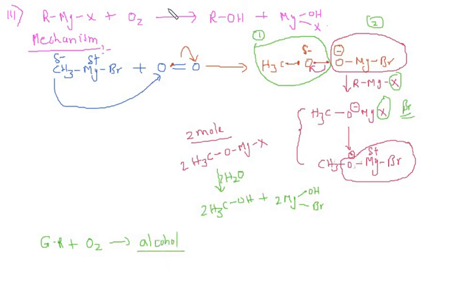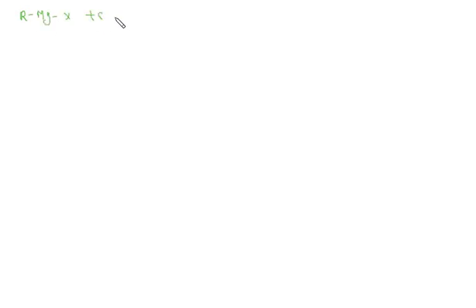If you are thinking about the solvent, you should take dry solvent. Now let's move towards the fourth reaction — the reaction with sulphur. This is the Grignard reagent reacting with sulphur, and it forms RSH plus the by-product. This product is basically called a thiol.